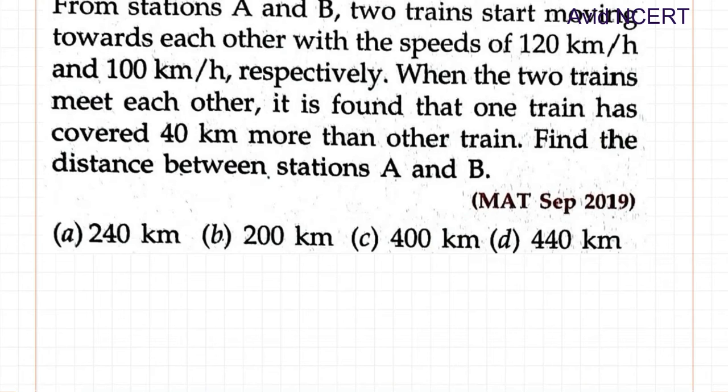So from the first sentence, the data we have here is from stations A and B, two trains start moving towards each other. So there is a train starting from here and there is another train moving from here to here towards each other.